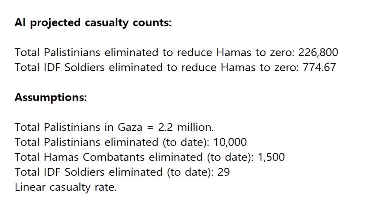On the upside, there'll probably be fewer casualties going forward because there will be more precision as they go street to street. However, IDF soldier losses will probably rise quicker because it's obviously more dangerous going street to street as opposed to bombing from the sky. At the current rate, the total Palestinians eliminated to reduce Hamas to zero is 226,000. IDF losses will be around 774. Obviously, if you believe the Palestinian numbers, this will be considerably higher. It could be anywhere from 700 and even higher as they go into street-to-street fighting.